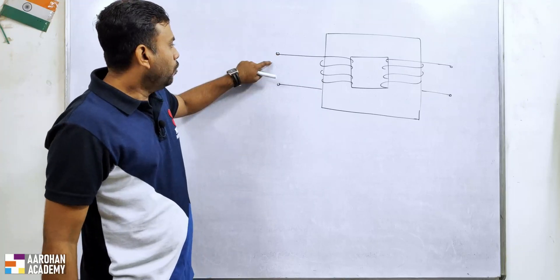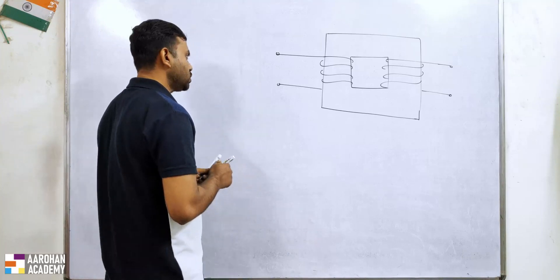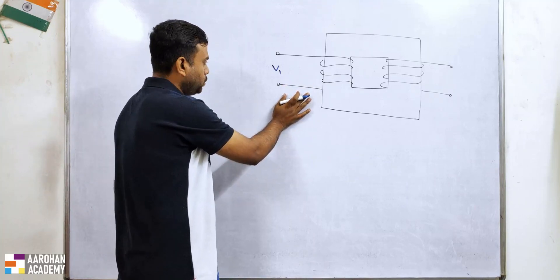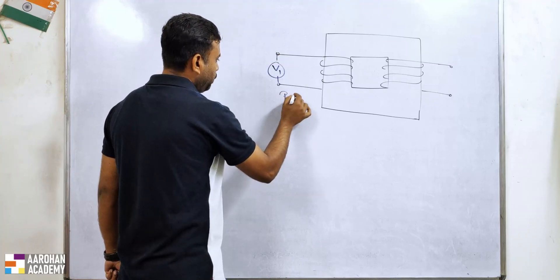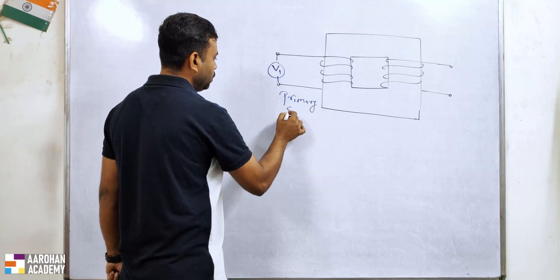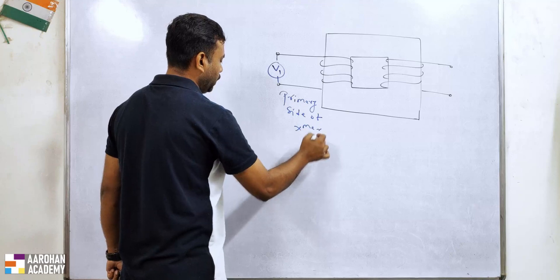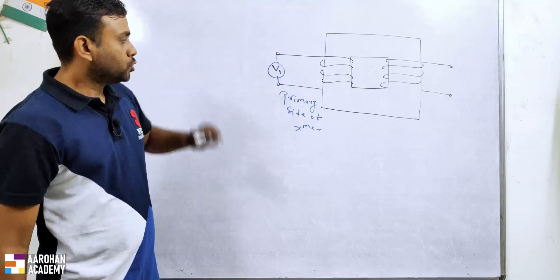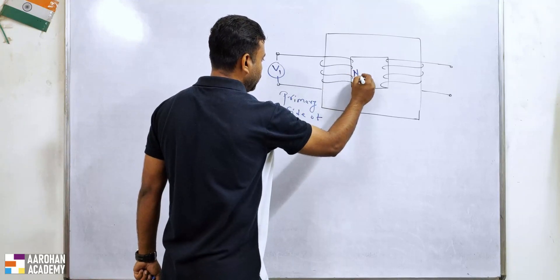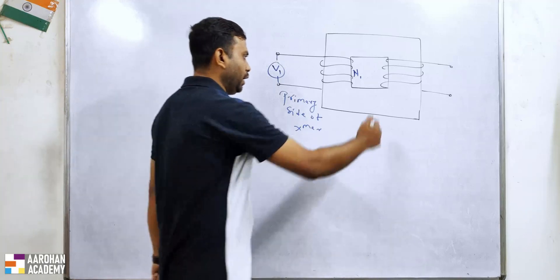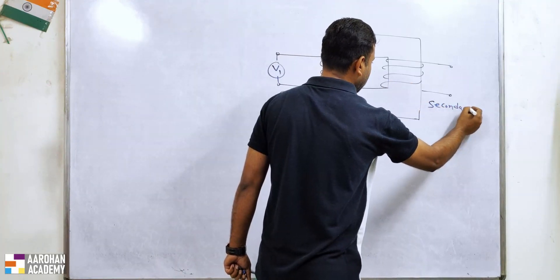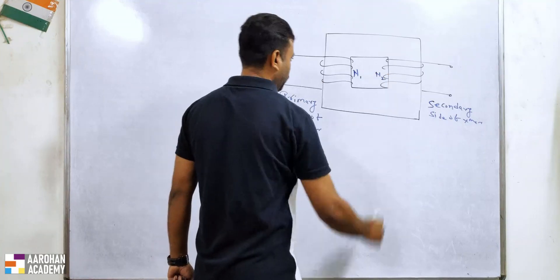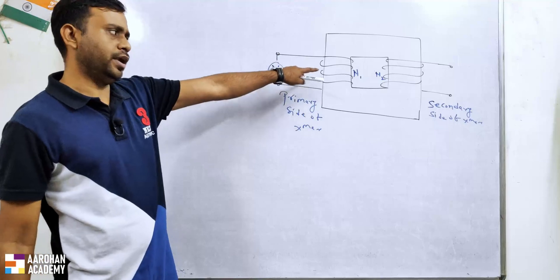Here I am giving a supply on this side, so I will call this the primary side. I am giving voltage V1 to the primary. This is the primary winding of the transformer, which contains N1 number of turns. This is the secondary side of the transformer, which contains N2 number of turns. So we have the primary winding and the secondary winding.